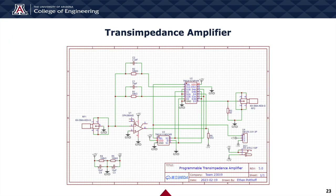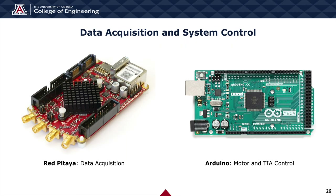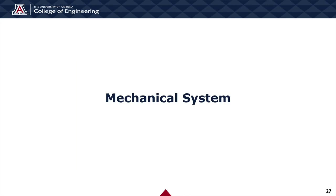We also designed our own transimpedance amplifier (TIA), which converts the current from the detector into an output voltage and is capable of switching between different gain settings. It was designed to minimize parasitic capacitance. Other important components include the RedPitaya, which acts as our data acquisition device with 14-bit analog-to-digital conversion resolution, and the Arduino, which controls our two stepper motor drivers and all other motors. The stepper motors control the large rotation stage for detector arm rotation and the small rotation stage for sample rotation.